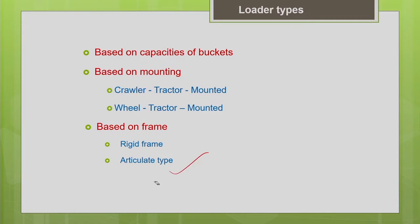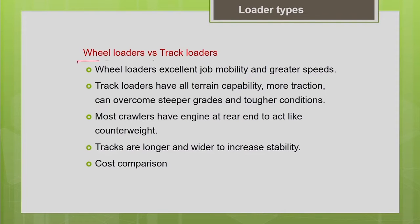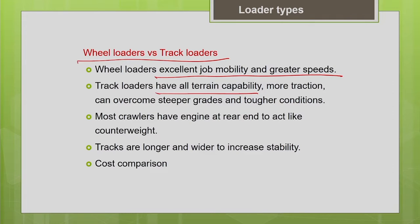First, let us compare wheel loaders versus track loaders. The wheel loader gives high mobility — wherever you need higher speed and greater haul distance, you can go for the wheel loader, with an economic haul distance of up to 200 meters. The main advantage of the track loader is its all-terrain capability — it is suitable for very poor underfoot conditions and can climb steeper grades on rocky or clay terrain. The track loader generates more tractive effort and breakout force, so for tough job conditions like quarries and handling rock, the track loader is preferable.